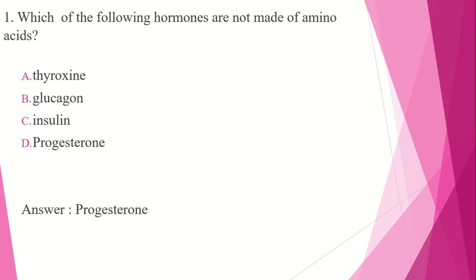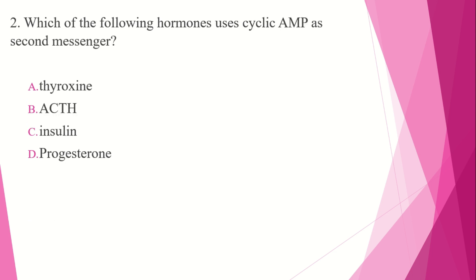The following hormone uses cyclic AMP as a second messenger. Option A: thyroxin. Option B: ACTH. Option C: insulin. Option D: progesterone.